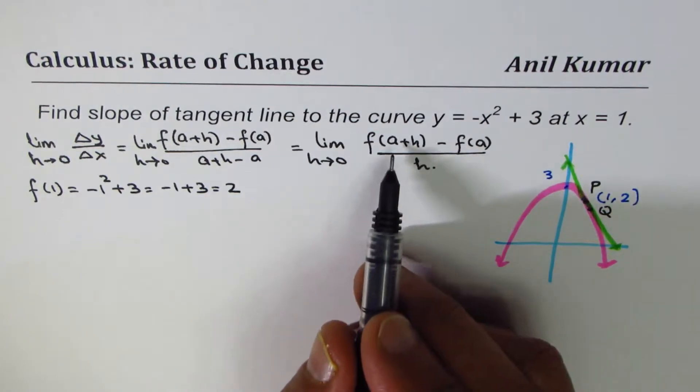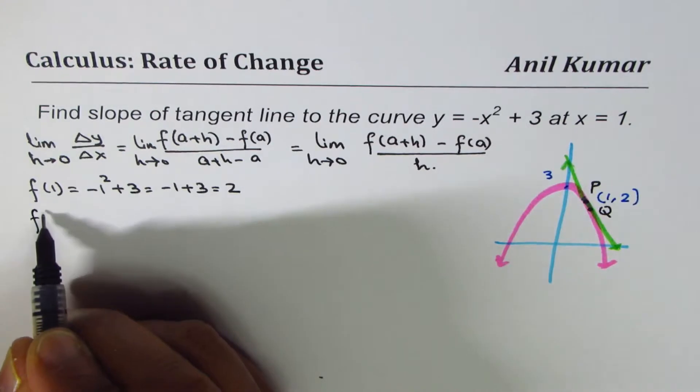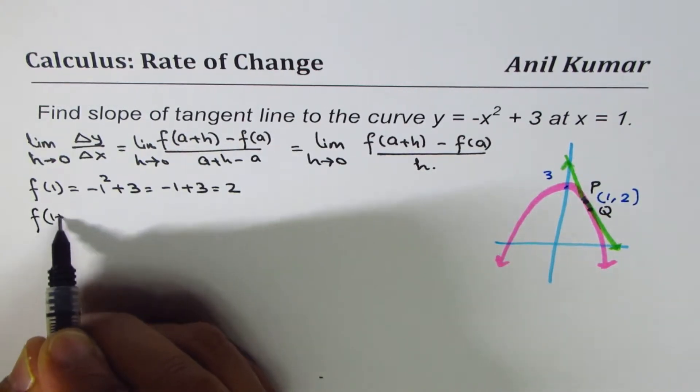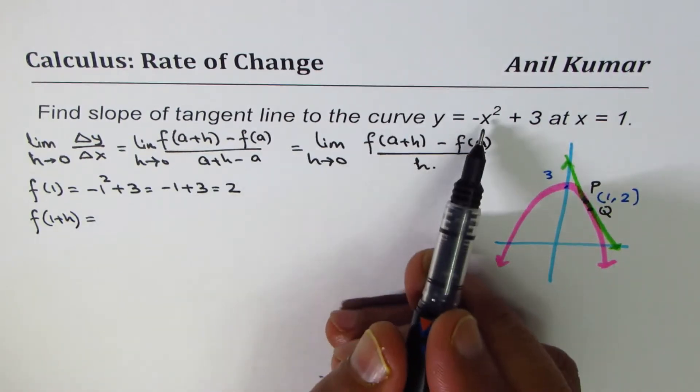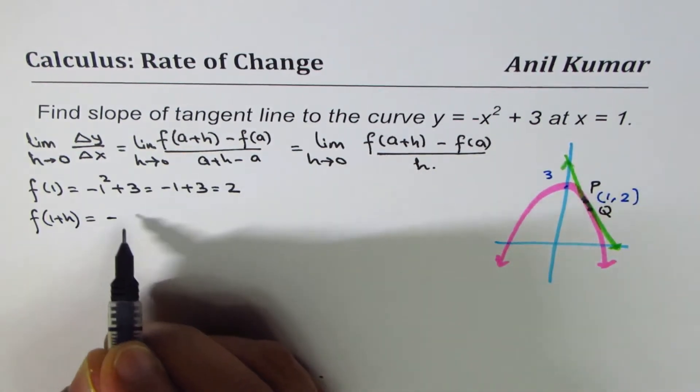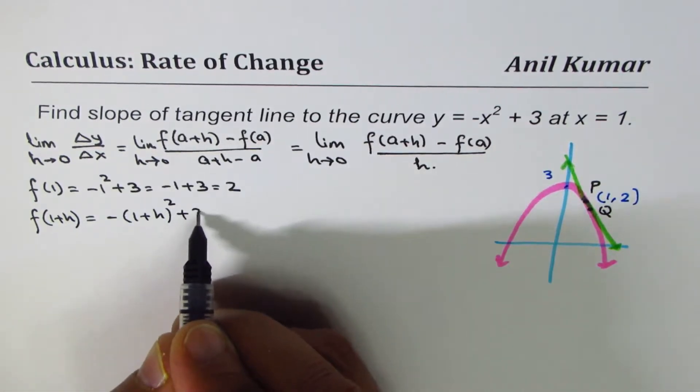Let's find what is f(1 + h). a is 1 in our case. So what is f(1 + h)? To find f(1 + h), we will replace x with 1 + h, -(1 + h)² + 3.